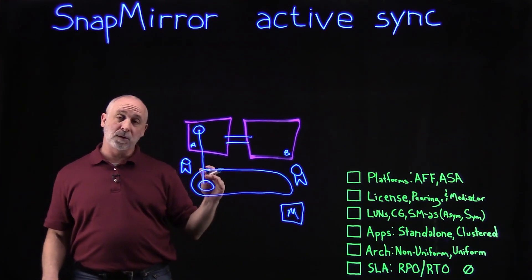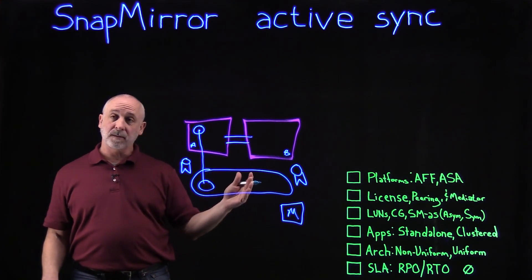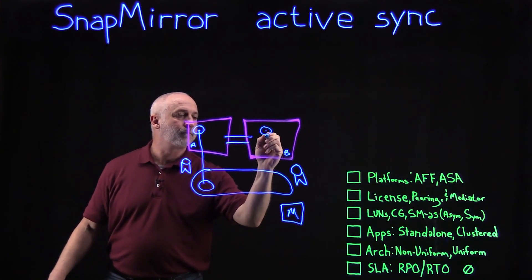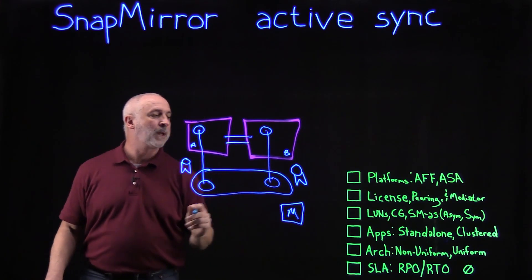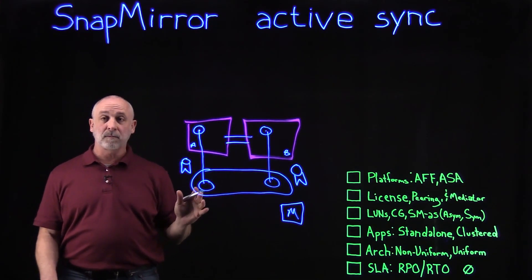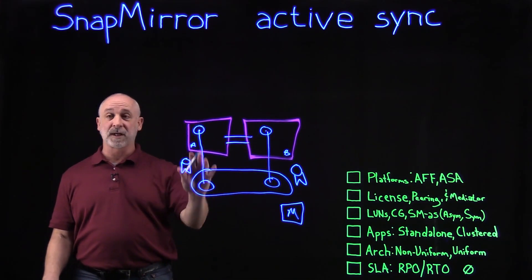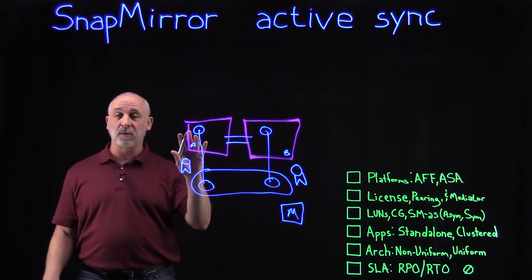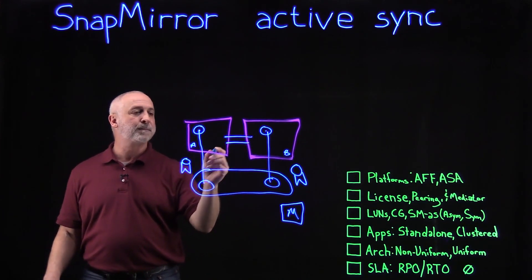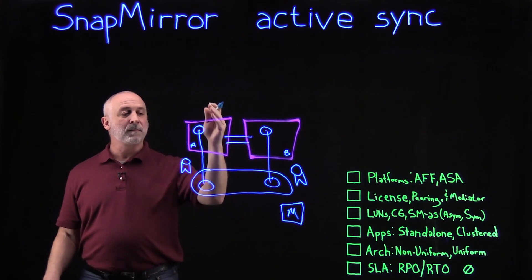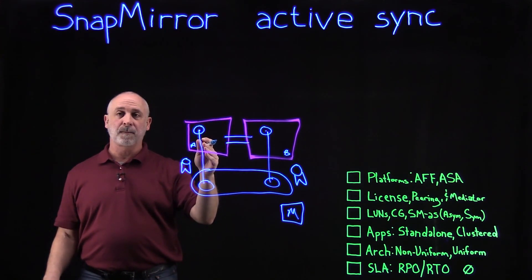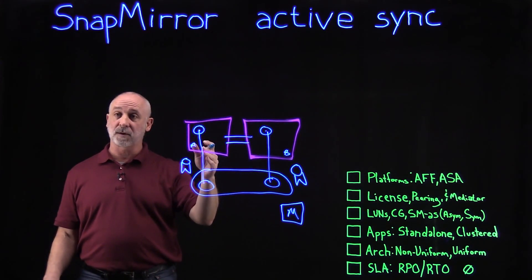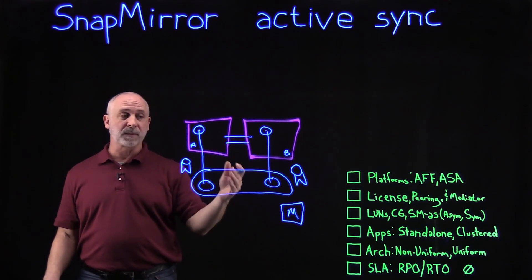At this point, we can start to configure SnapMirror ActiveSync to begin its replication. We have the ability to do either asymmetric or symmetric replication. With asymmetric replication, one of the clusters — where the originating data is — is the primary cluster and does most of the reads and writes. When data is written, it is usually written to that primary cluster. If data is inadvertently written to cluster B, it will be processed back to cluster A for its subsequent writes and replication.